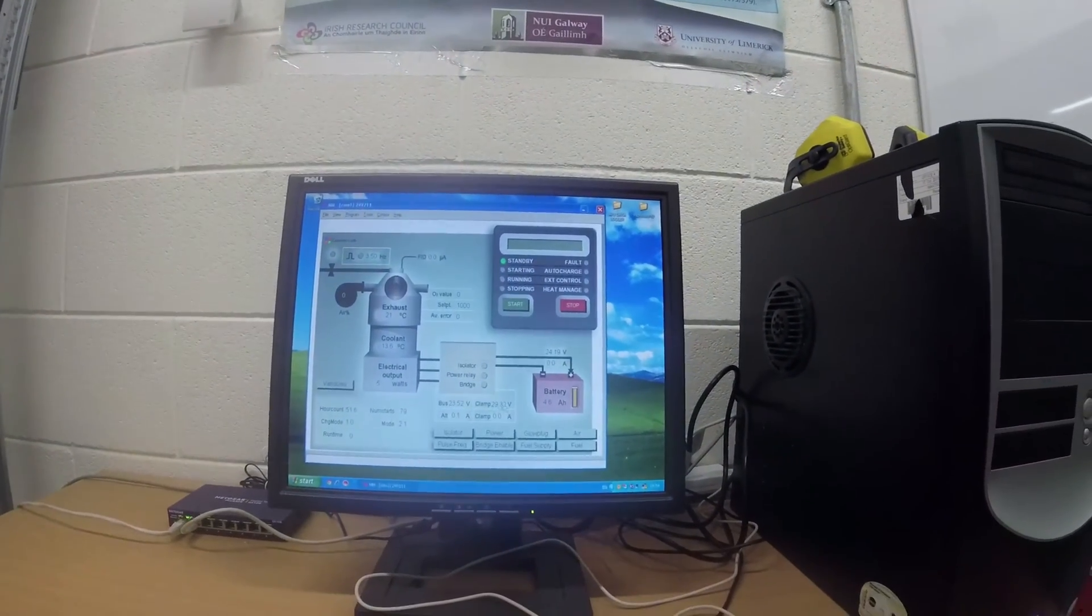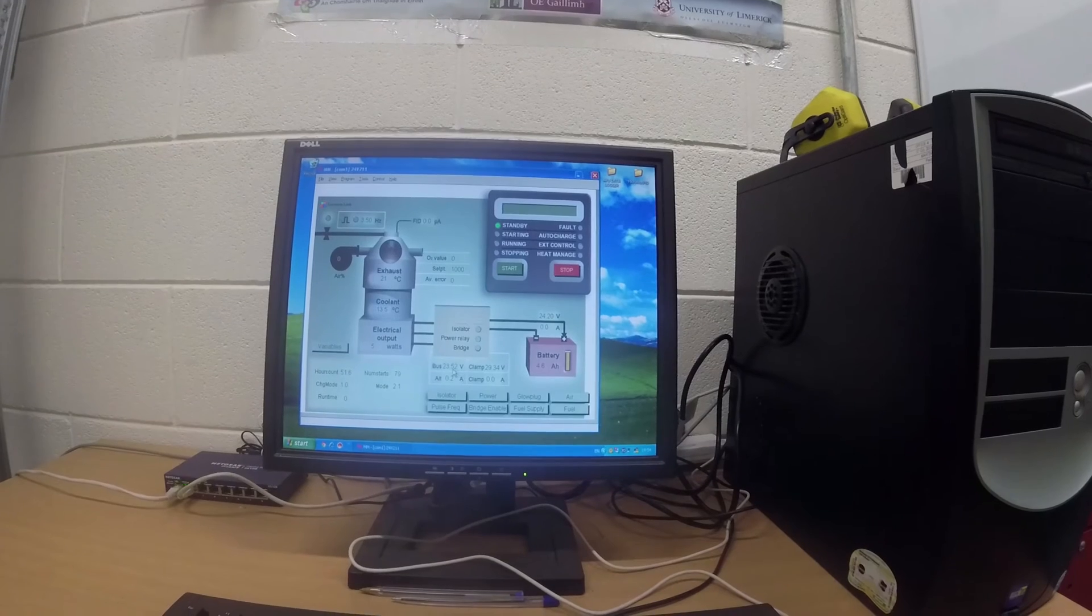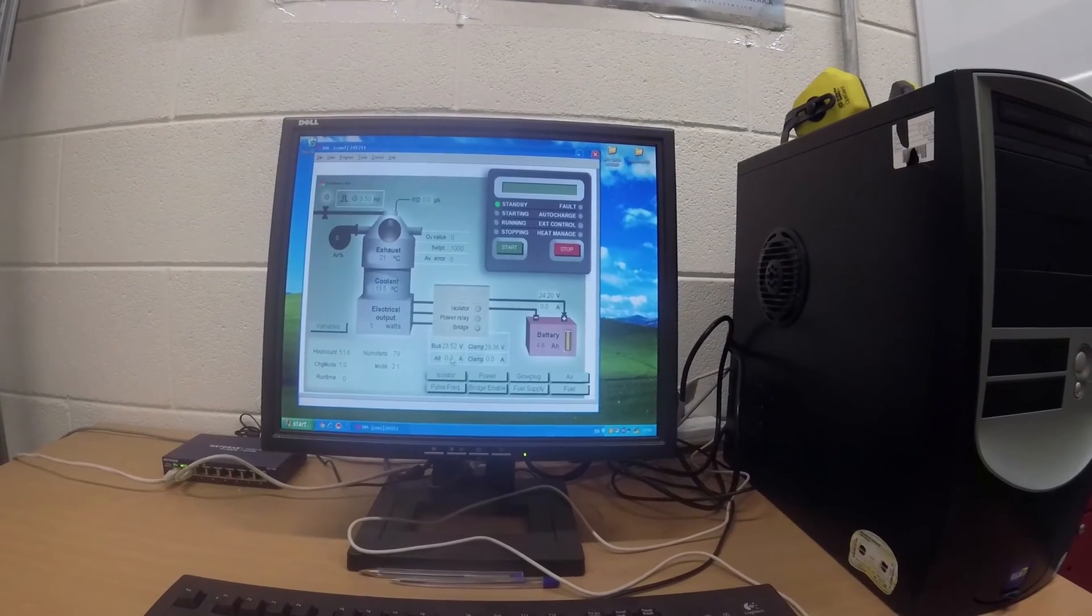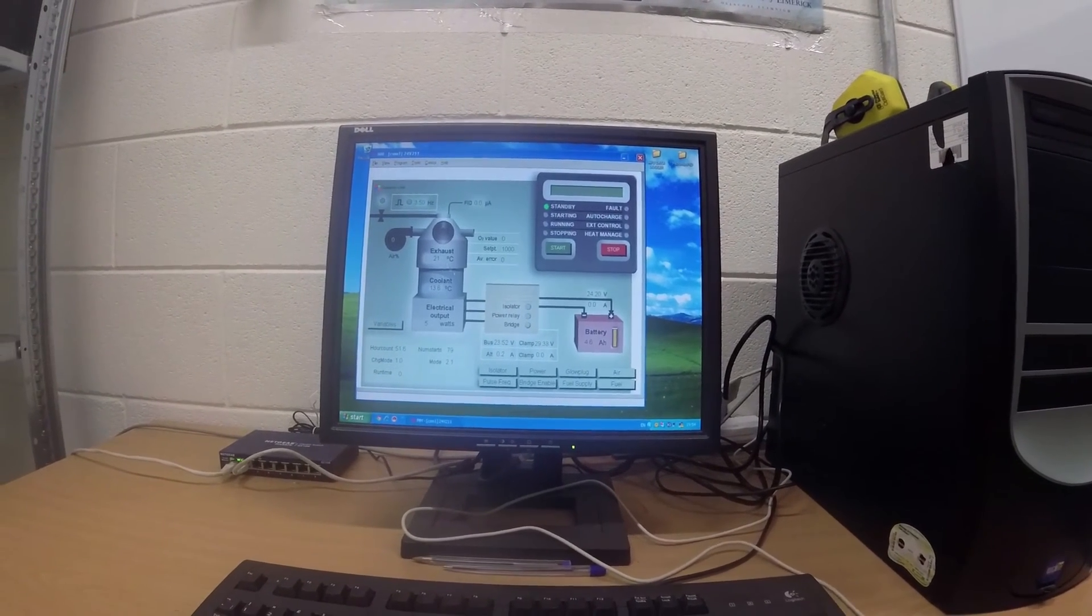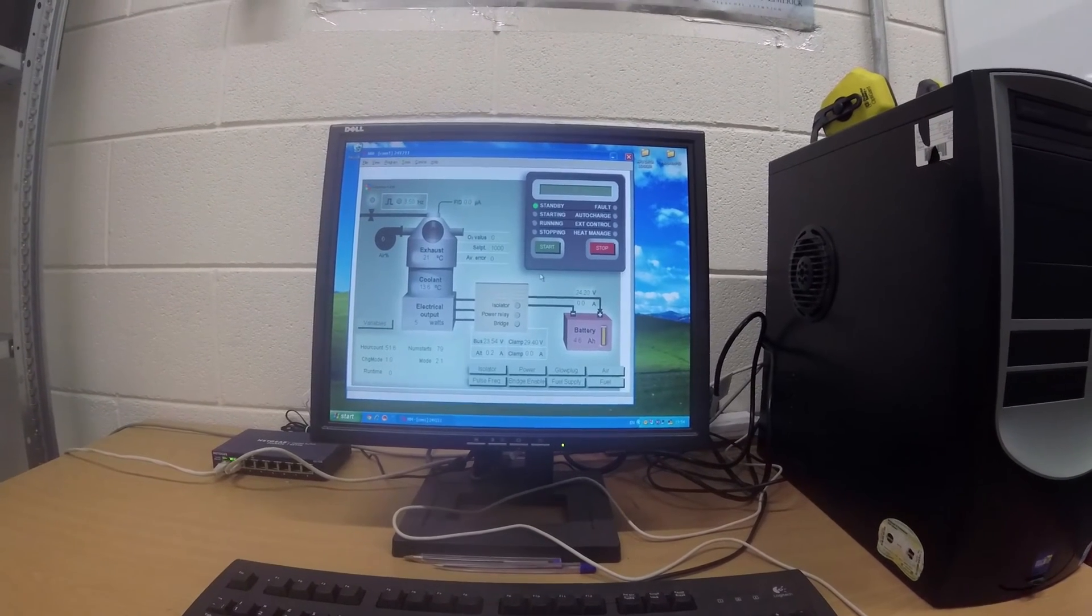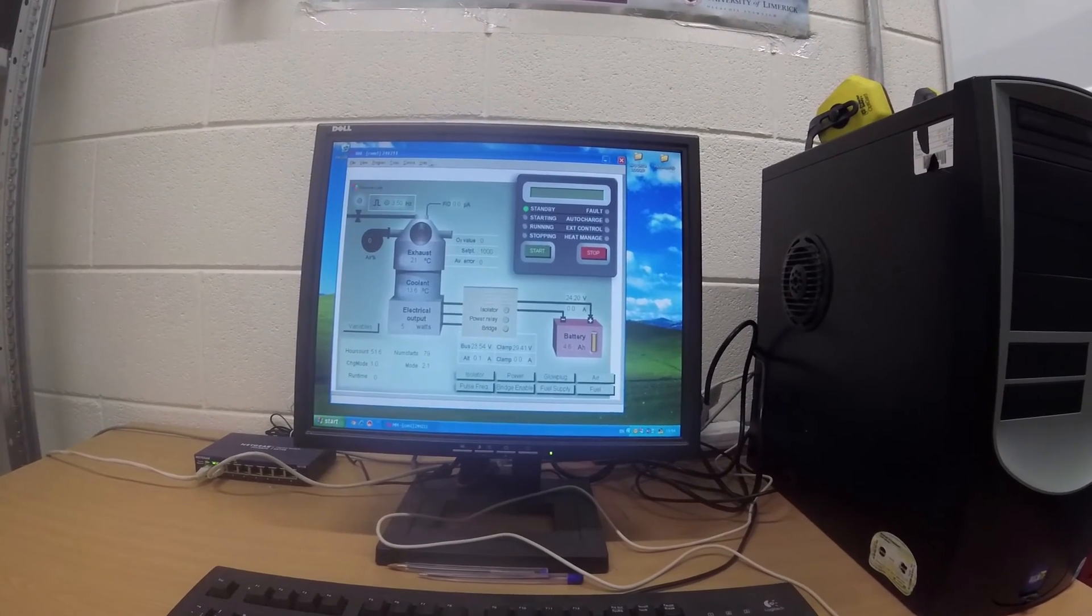We can see various bits of engine data, the bus voltage, that's the actual battery, the clamp voltage, alternator current, the electrical output, and various temperatures. And that's effectively all we need.